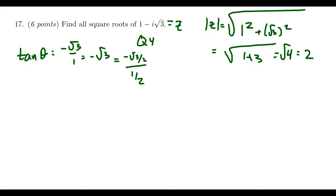So when does cosine equal one half and sine equal negative root three over two? That's going to be in the fourth quadrant. Sine equals root three over two at 60 degrees in the first quadrant, so we're looking for the angle that references 60 degrees in the fourth quadrant — that's 300 degrees, or in other words, theta equals five pi over three.